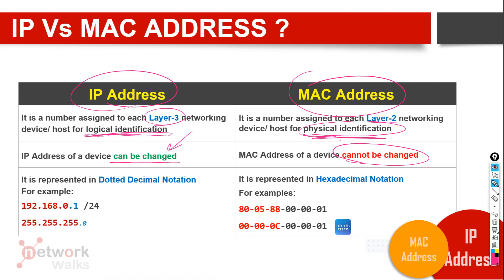Another difference is that an IP address is represented in dotted decimal notation, for example 192.168.0.1 — a decimal number, then a dot, a decimal number, and a dot — that's why it's called dotted decimal notation. It usually comes with a subnet mask as well.